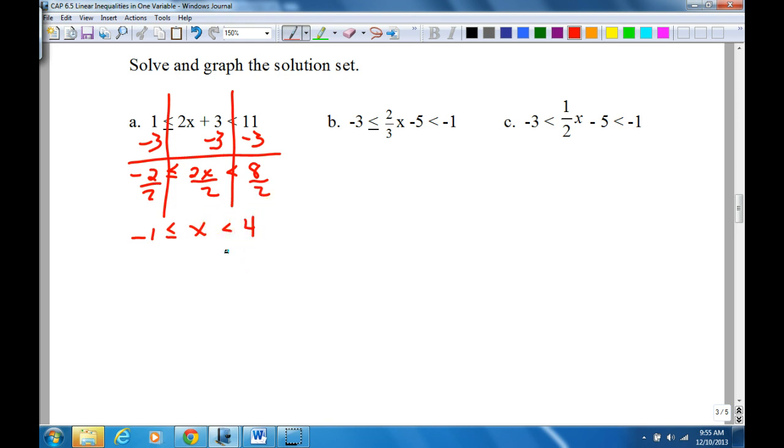The second part of this is graphing. And basically, most of these that are like this are x lies between two numbers. So this would be negative 1 and 4 here. And is it an open circle at negative 1 or a closed circle? Closed, because it's an equal sign underneath there. And then, at 4, is that an open circle or a closed circle? Open. So I would go through and fill in between.